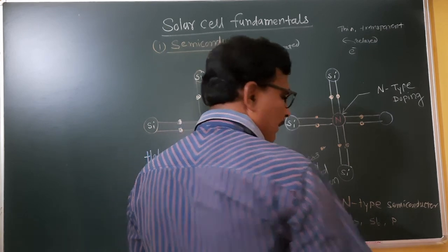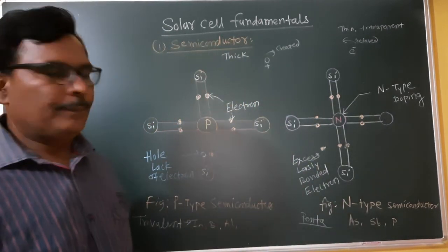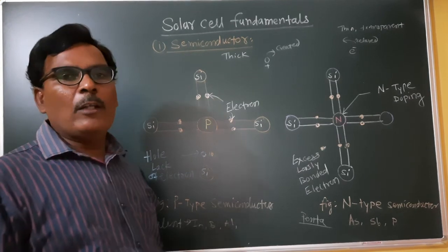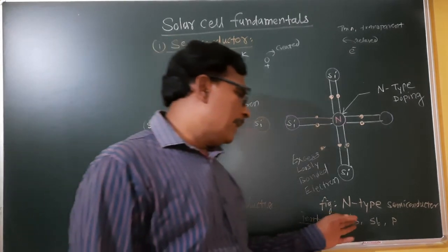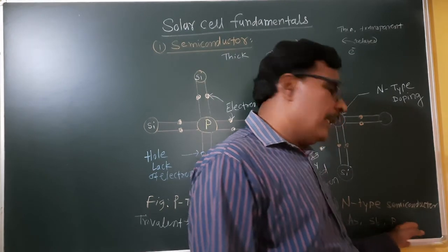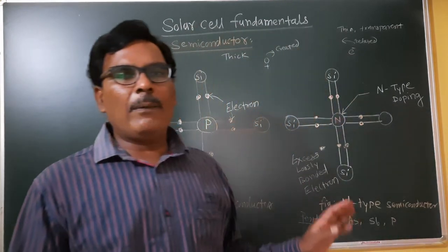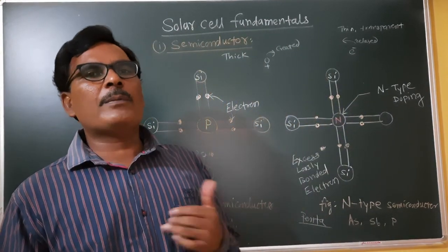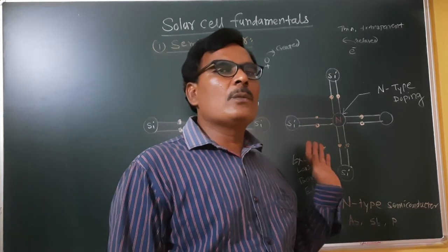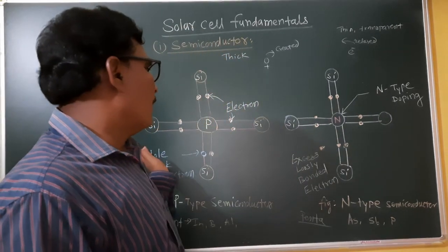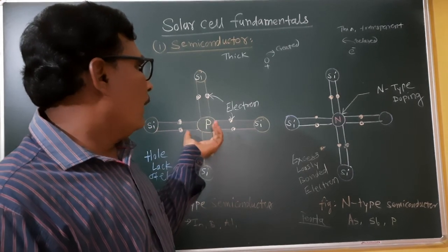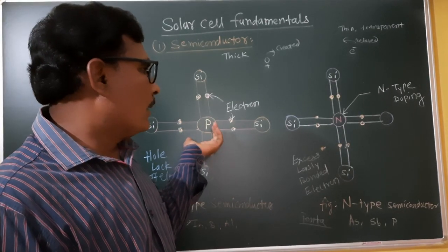Trivalent means third group elements — indium, boron, and aluminum. Pentavalent means fifth group elements — arsenic, antimony, and phosphorus. Pentavalent impurities are used for N-type semiconductor and trivalent impurities are used for P-type semiconductor. These are doped into the silicon crystal structure.